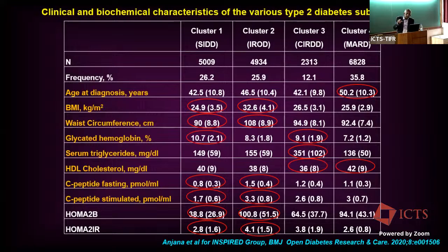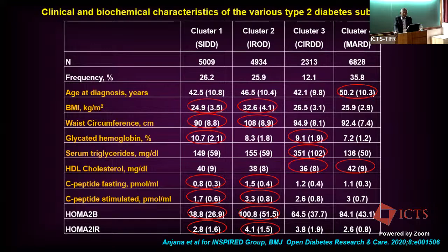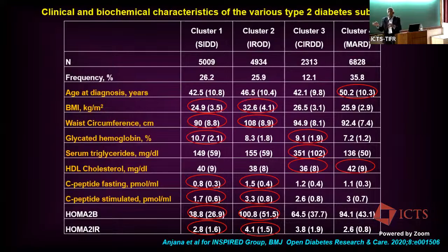The variables used were age at diagnosis, BMI, waist, HbA1c, C-peptide (a simpler marker of insulin secretion done routinely), HDL, and triglycerides. Four types emerged: the severe insulin-deficient (SID) and mild age-related (MARD) were similar to Scandinavia, but with shifts — Scandinavia's MARD occurred above 65, India's above 50; all Indian groups were in their 40s, reflecting the earlier onset. SID occurred at a much younger age with more severe insulin deficiency. A new type unique to India — CIRDD (combined insulin resistance and deficiency diabetes) — was found in 12.1% of patients. CIRDD had the lowest HDL (around 36) and highest triglycerides (around 351), more than double other groups.